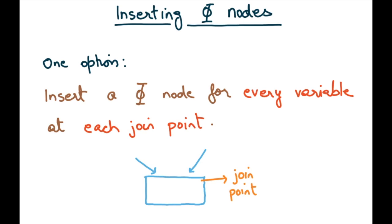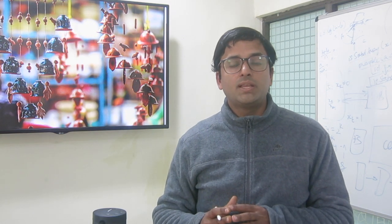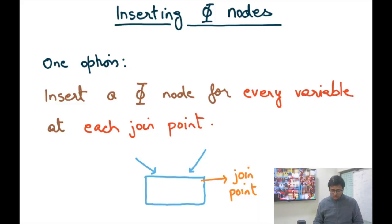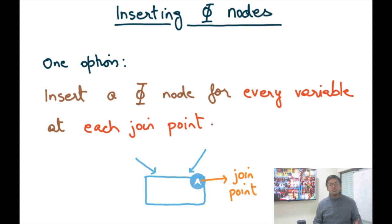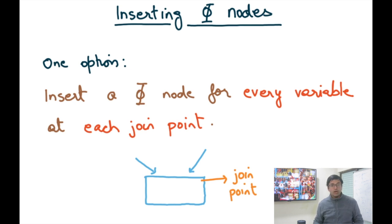Last time we discussed how we can convert a program written in any IR to an SSA IR, but we saw there's a problem at a join point where there are multiple paths coming together and different versions of the same variable are flowing on the two incoming paths. The solution was to introduce a notion of a phi node or phi function, which can only be added to the beginning of a basic block — usually one with multiple incoming edges. The question is: how do you know where to add phi nodes?